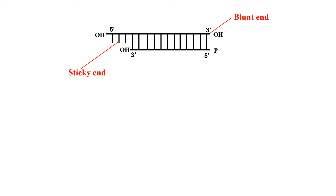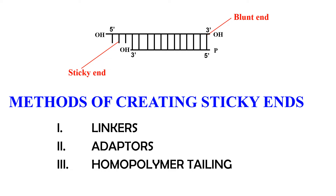The left-hand side end has one or more unpaired or overhang bases, so that end is known as a sticky end. These unpaired base pairs can easily base pair with another DNA molecule which also has unpaired base pairs. Blunt ends do not base pair or bind to other DNA molecules as efficiently as compared to sticky ends.